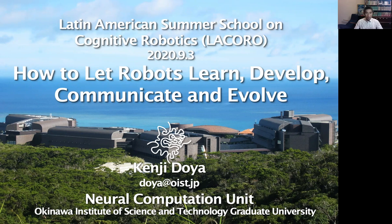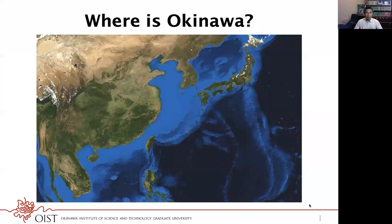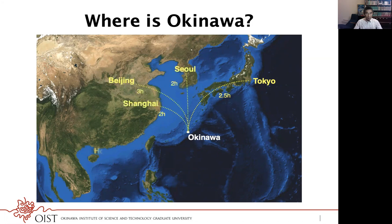Do you know where Okinawa is? This is the opposite side of the Pacific Ocean. It's in the southwest end of Japan, a 2.5-hour flight from Tokyo, but it is close to other areas in East Asia. We hope that not only tourists, but scientists and students can get together here for international research.